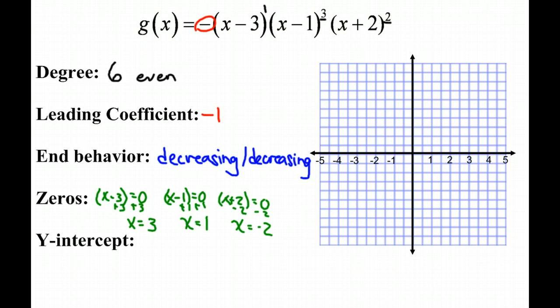And remember, along with zeros, you have multiplicity according to the degree. So we have a multiplicity of 1 here because our degree was 1 when we used x minus 3. When we used x minus 1, our degree was 3. So we have a multiplicity of 3 there.